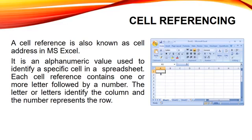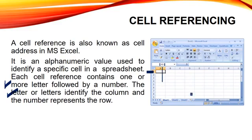As you can see, we have selected cell A1 and the address of this cell A1 is written in the name box. This cell address has two things: it has a letter and a number. Each cell reference contains one or more letters followed by a number. The letter identifies the column whereas the number represents the row number. So A1 represents column A and row 1. For a particular cell, our reference will be D8 because our column is D and our row is 8.